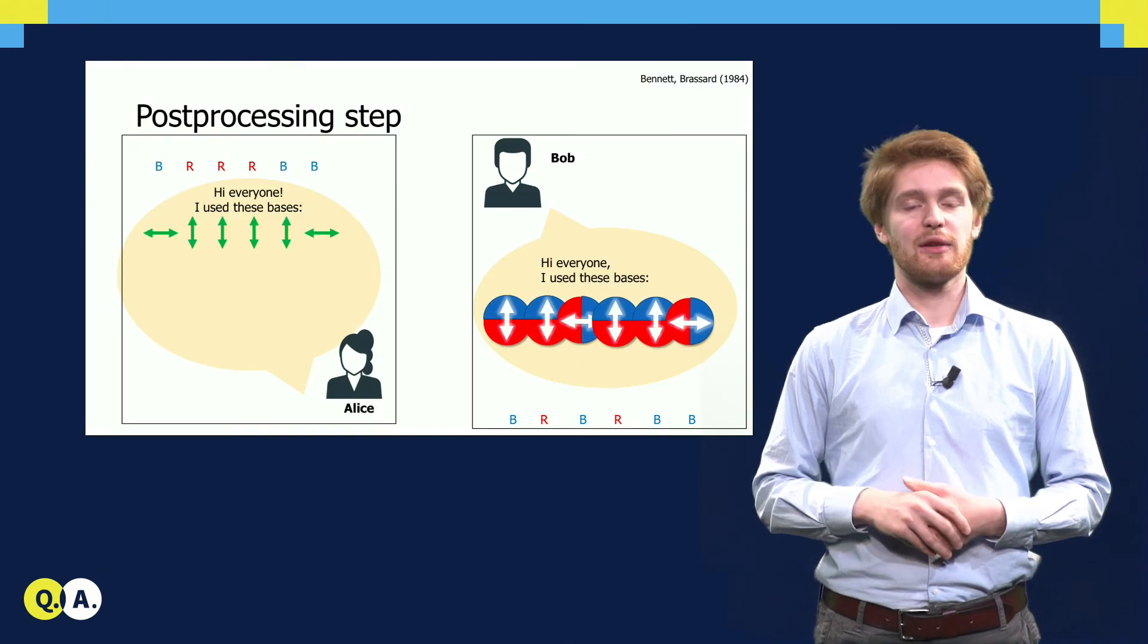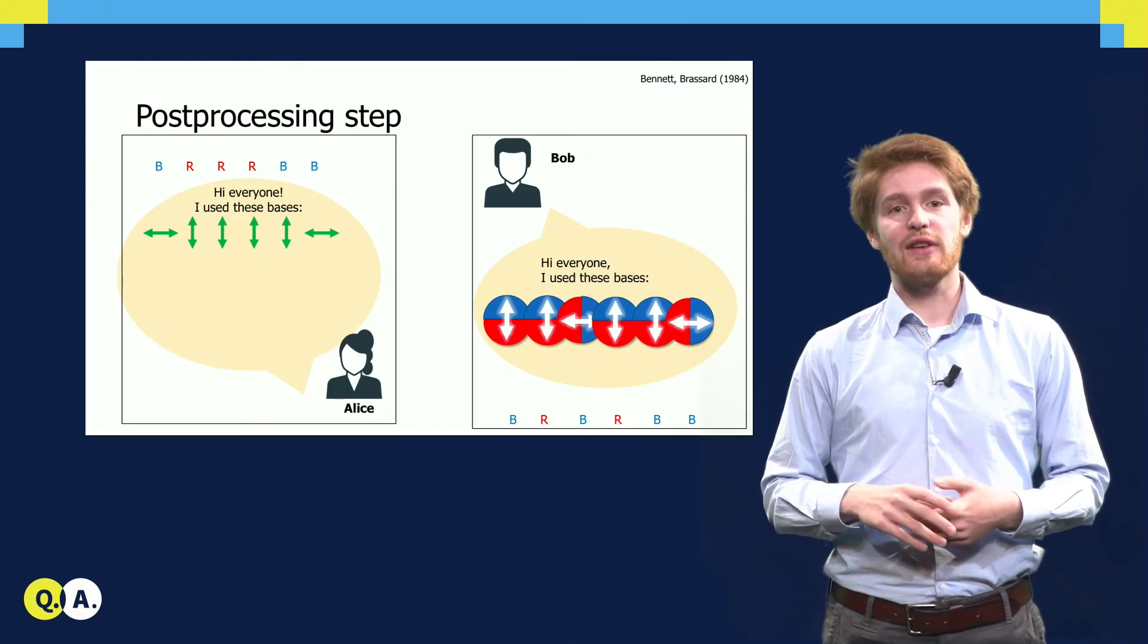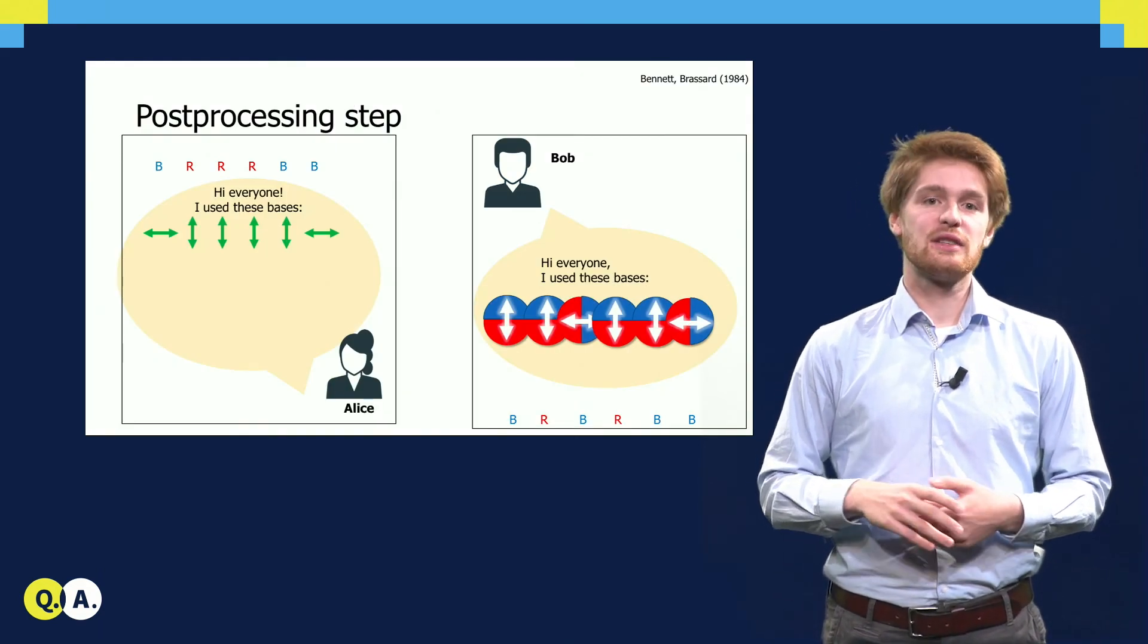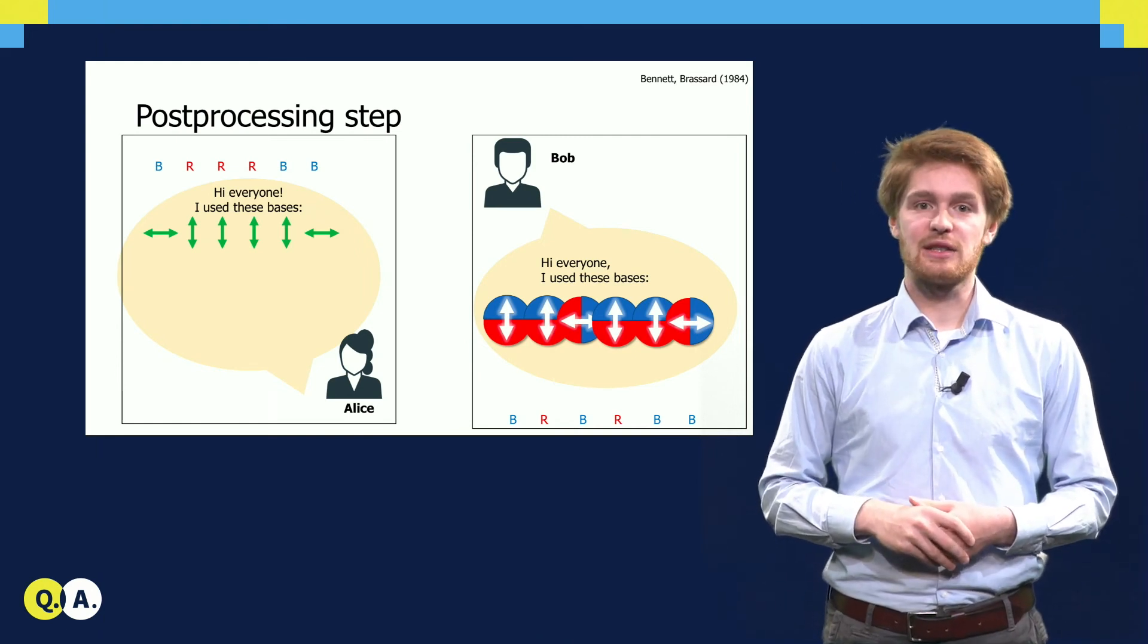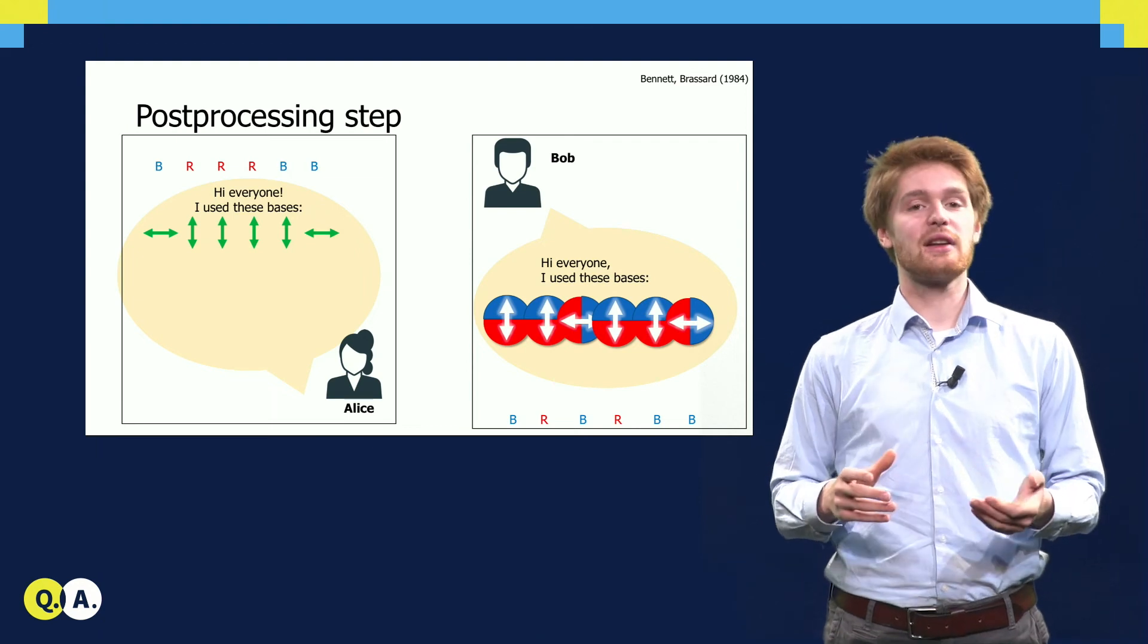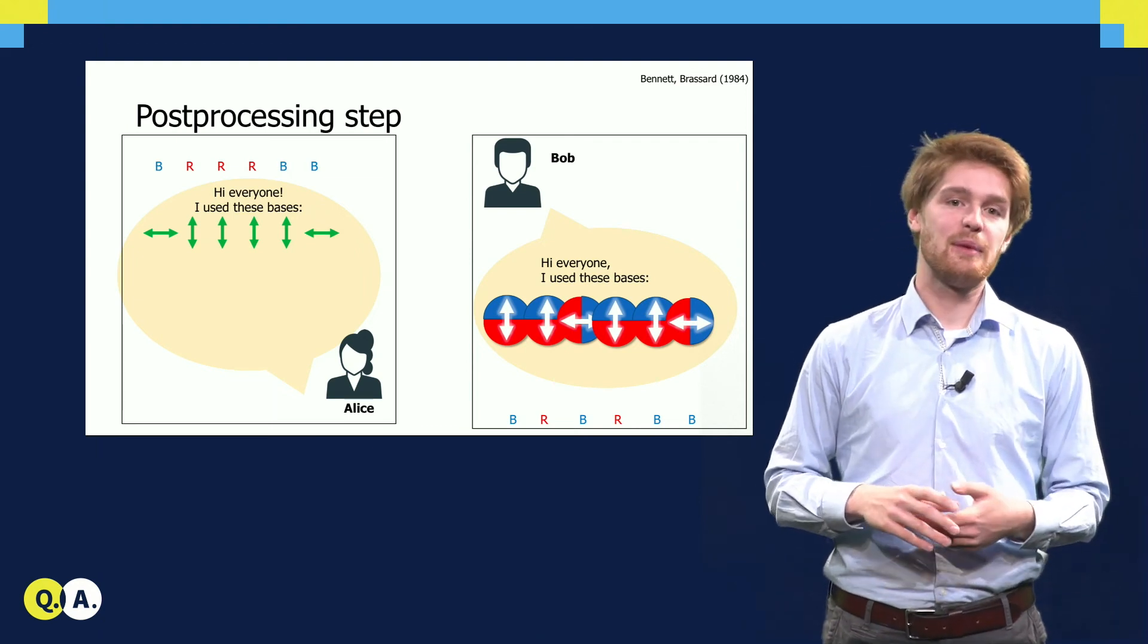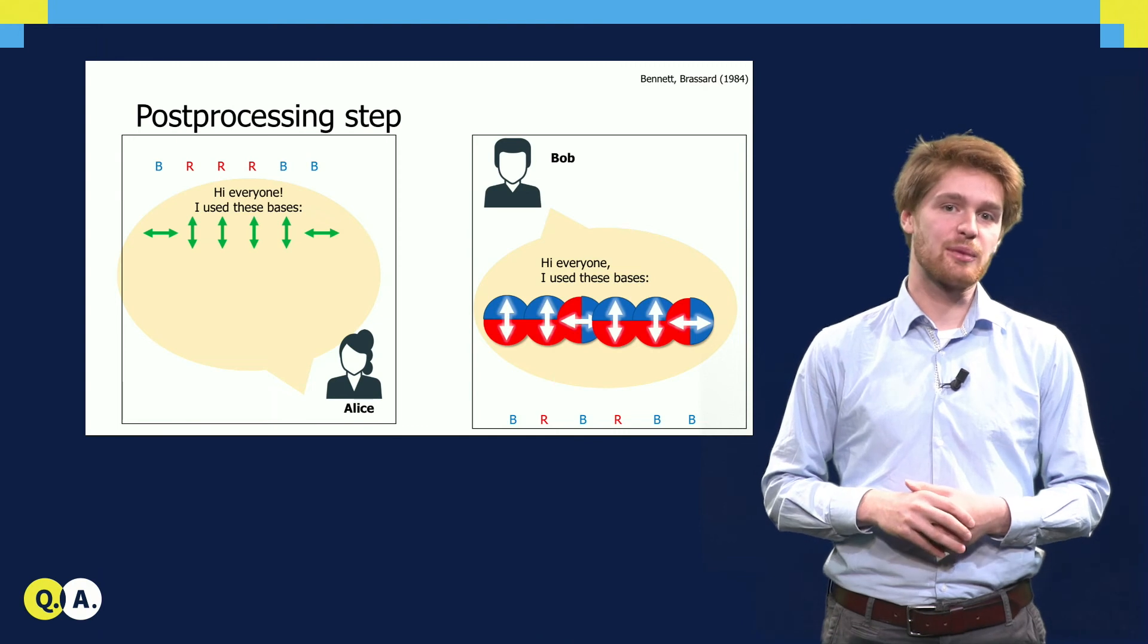The next part of the BB84 protocol does not involve any quantum anymore, but only consists of classical post-processing. First, both Alice and Bob publicly announce their measurement bases. Everyone in the world may hear these, even people wishing to eavesdrop on Alice and Bob's communication.